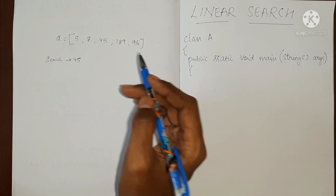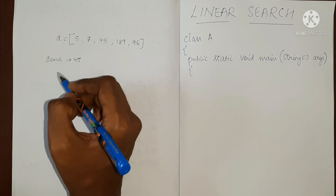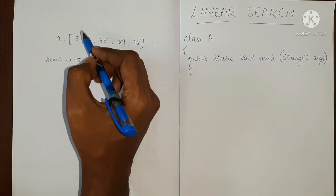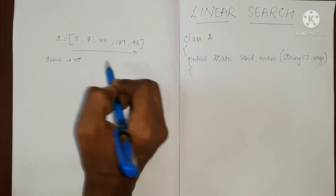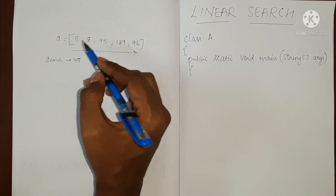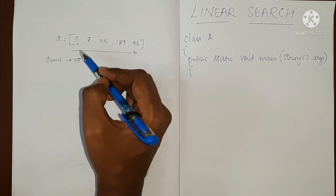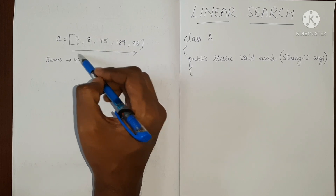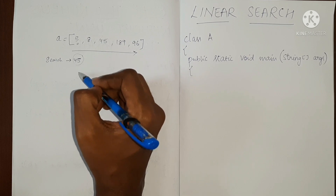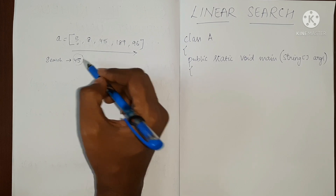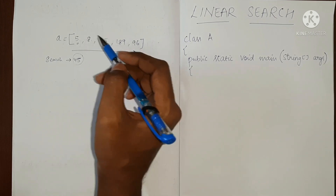In linear search, we are going to use a for loop to traverse the array, and at each index location we are going to check if 45 is present or not. If it is present, we will print it, or else we will move to the next location.